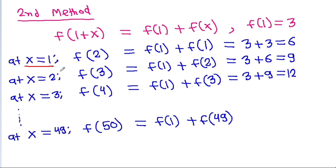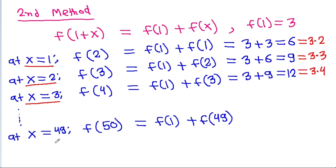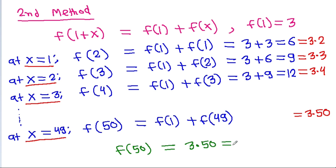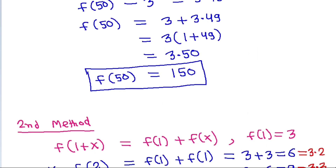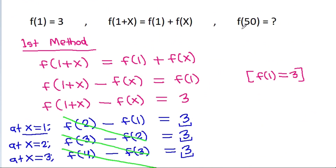At x equal to 1, it is equal to 3 times 2. At x equal to 2, it is equal to 3 times 3. At x equal to 3, it is equal to 3 times 4. So at x equal to 49, it will be equal to 3 times 50. So f(50) is equal to 3 times 50, that will be equal to 150. So f(50) is 150.